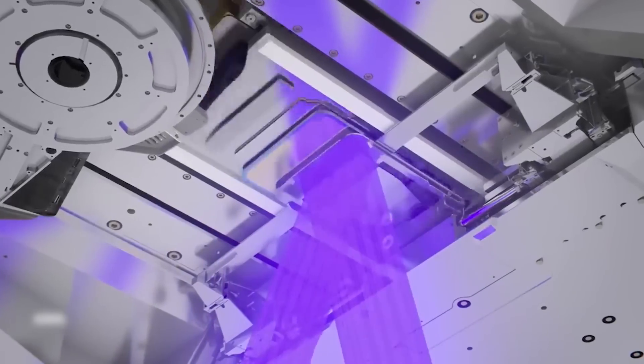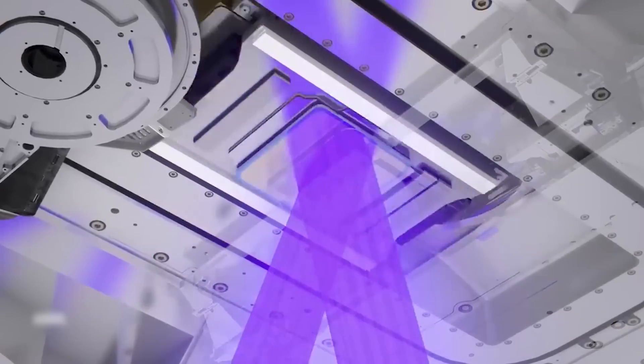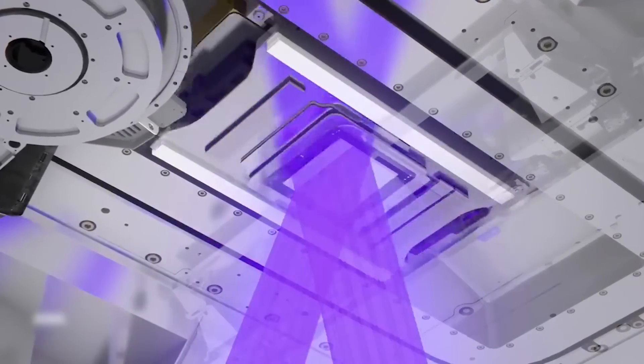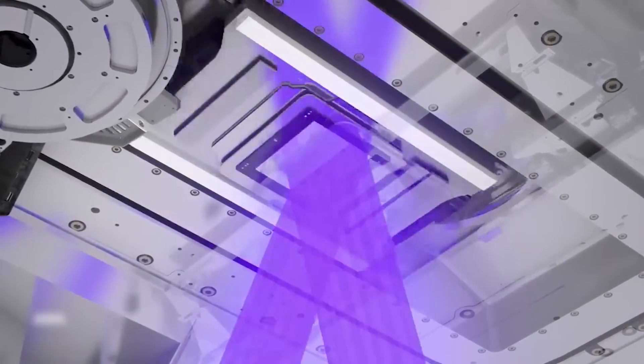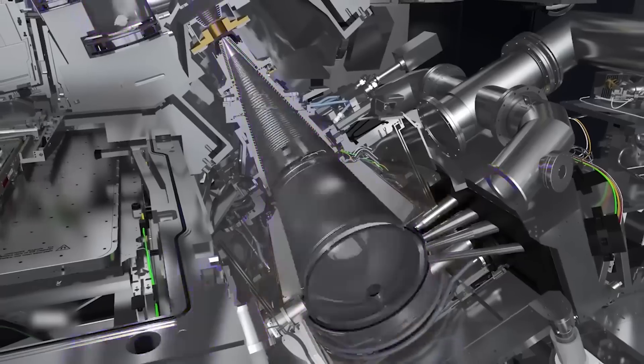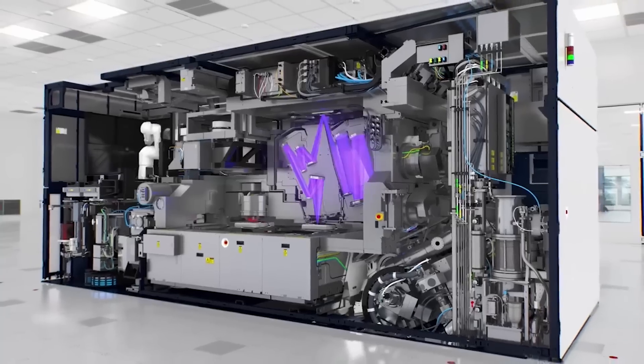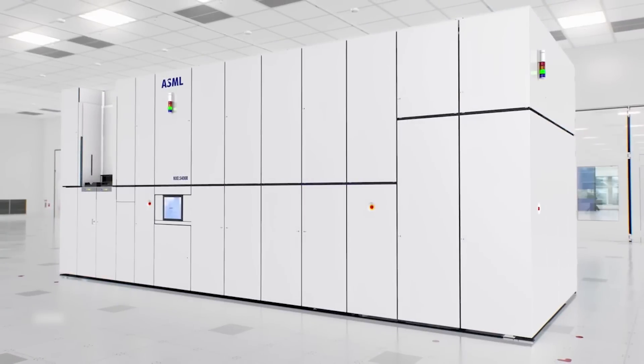The photo mask is like a stencil of a chip. Light is blocked or passed through the mask to the wafer to create the pattern. The light is produced by the ASML EUV Extreme Ultraviolet Lithography System. Each system is more than a quarter of a billion dollars.